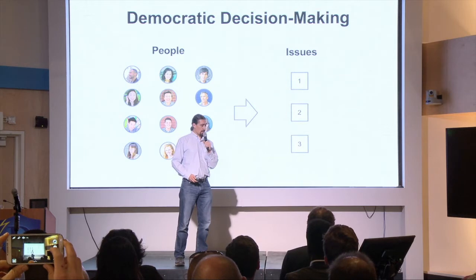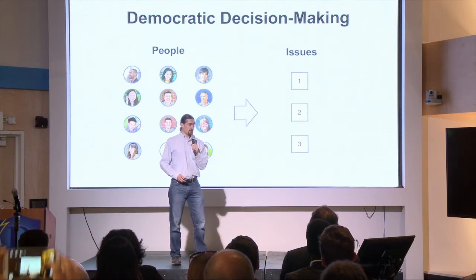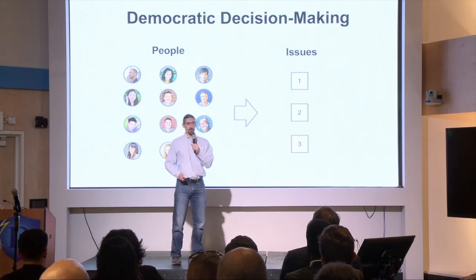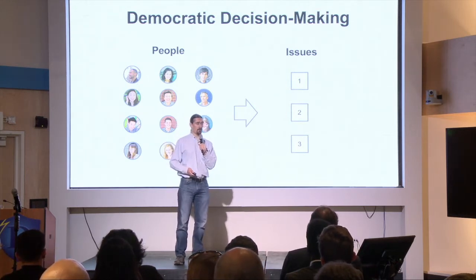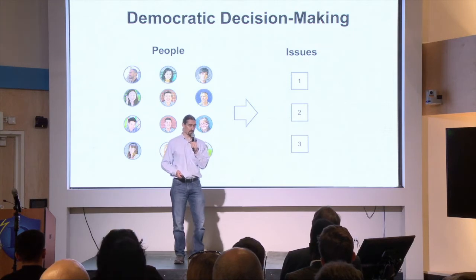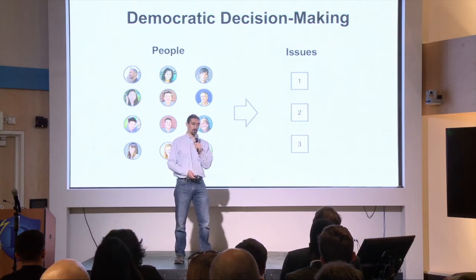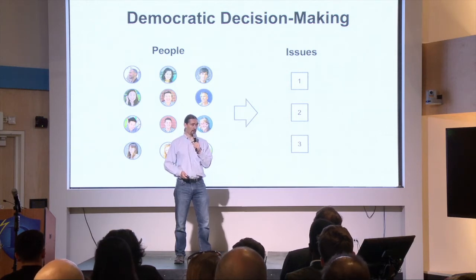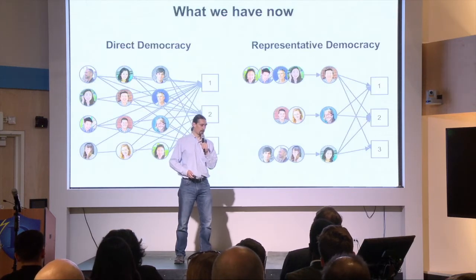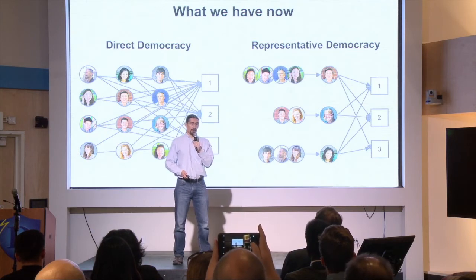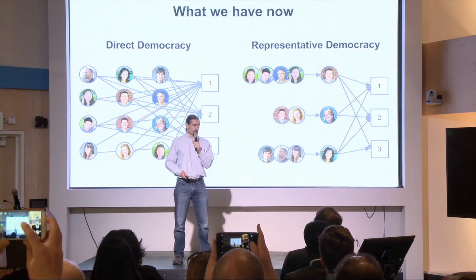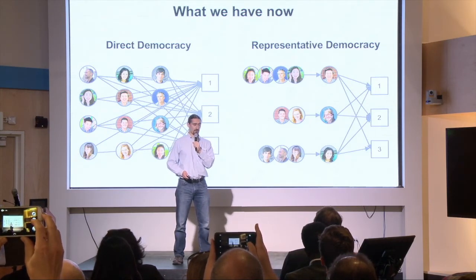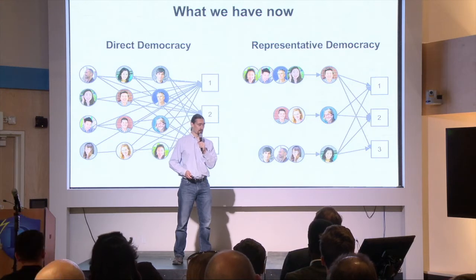So what are we talking about here? The general space: we've got a group of people and they want to make decisions on an issue. This could be a small group of people, a local volunteer organization, it could be something bigger — a parent-teacher association, or a government body of some sort. And what we have available now is generally a choice between direct democracy or representative democracy systems.